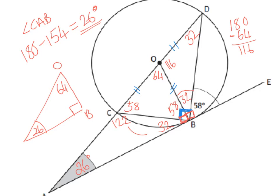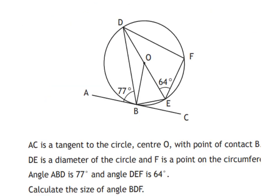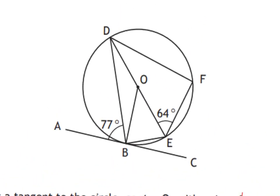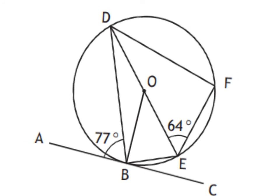Let's look at another one. This one has a lot in the question — it's told you about tangency, given some angles, and it's asking for angle BDF. Let's find some radiuses. We have some right angles, a triangle inside a semicircle, and here is another triangle inside a semicircle. O to B is a radius, so here is your radius and here is your tangent. So we've got some right angles going on there. First angle to get is this one up here — one side of the one I'm after — using the 64 and the 90. 90 plus 64 is 154, and 180 take away 154 is 26. So this bit up here is 26.